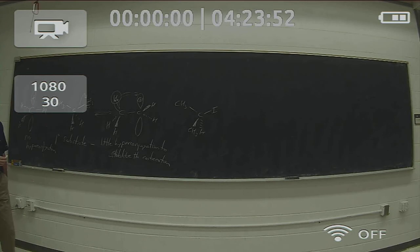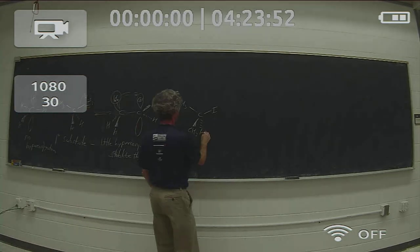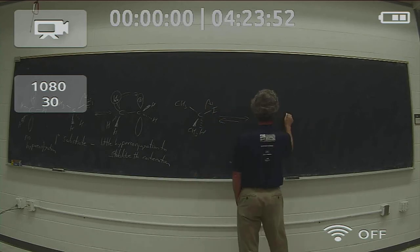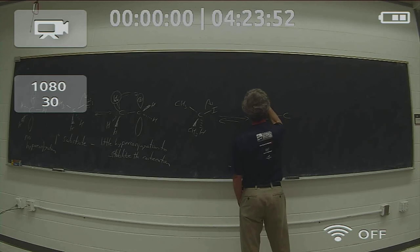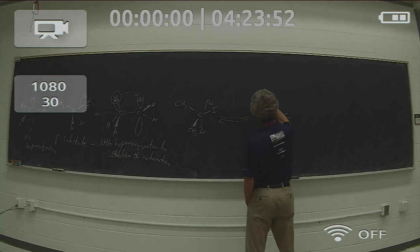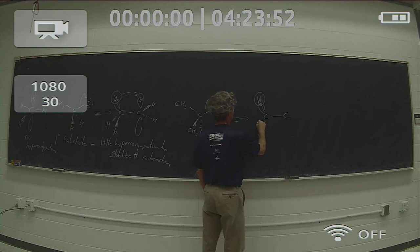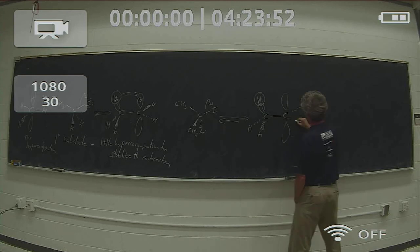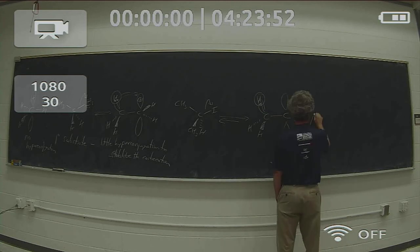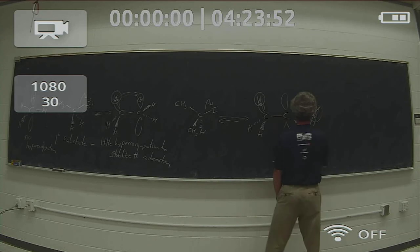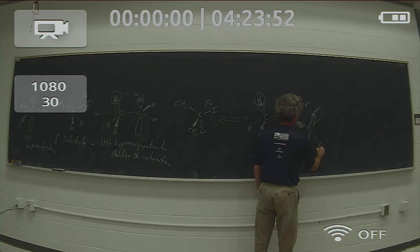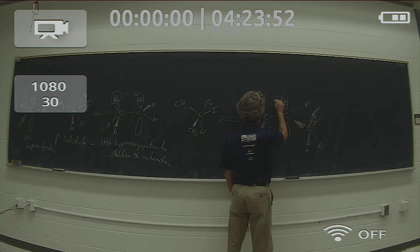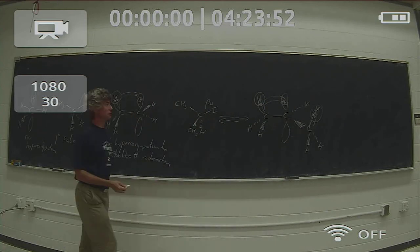If we compare that to 2-iodopropane, now we're going to be looking at a secondary carbocation. And that secondary carbocation is stabilized by hyperconjugation from the two adjacent alpha groups.